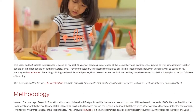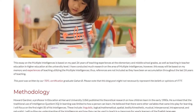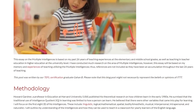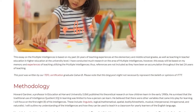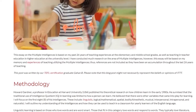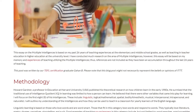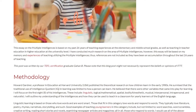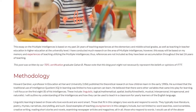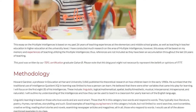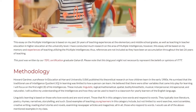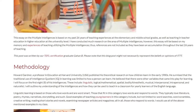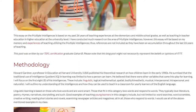Methodology. Howard Gardner, a professor in education at Harvard University, USA, published his theoretical research on how children learn in the early 1980s. He surmised that the traditional use of intelligence quotient in learning was limited to how a person can learn. He believed that there were other variables that came into play for learning. I will focus on the first eight of his intelligences.